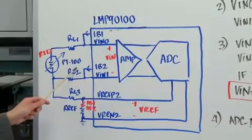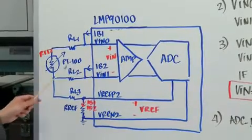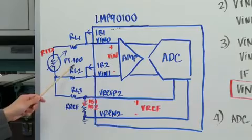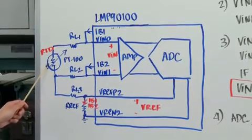So in this case, at 0 degrees Celsius, this RTD will have 100 ohm, and this resistance will increase as temperature increases.